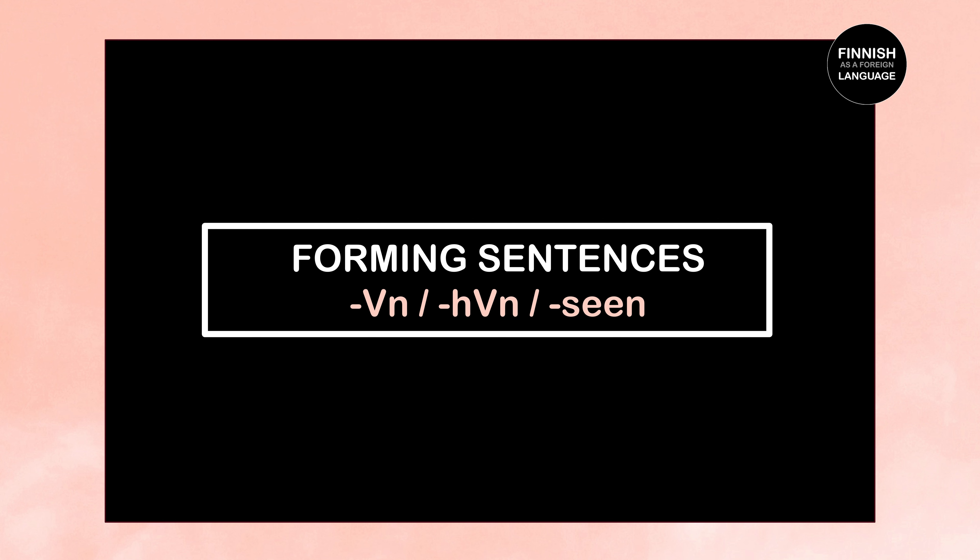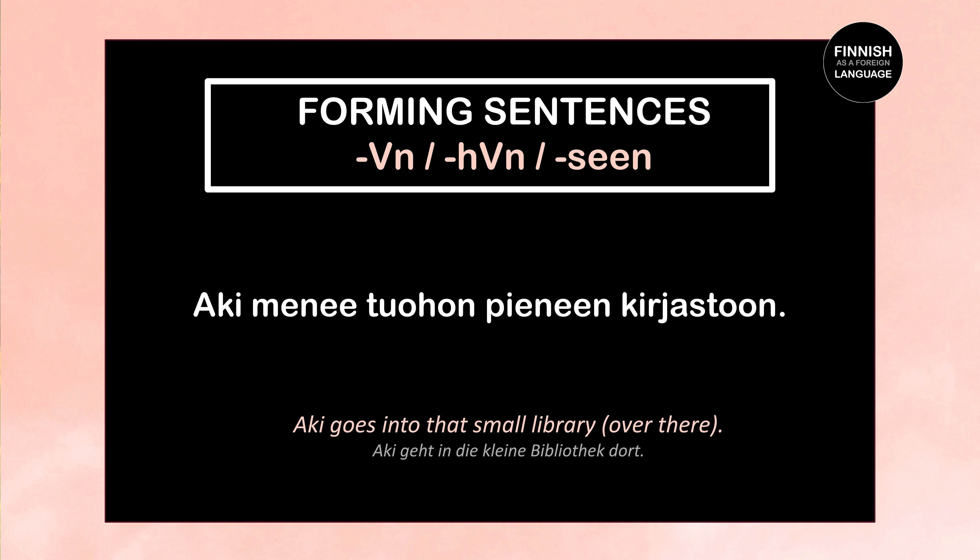Now let's look at some example sentences. Aki menee tuohon pieneen kirjastoon — Aki goes into that small library over there. Menee is the third person singular of mennä, meaning to go. Tuohon is the illative of tuo (that, referring to something further away but visible). Pieneen is the illative of pieni (small), and kirjastoon is the illative of kirjasto (library). Since tuo and pieni both refer to the library, they also take the illative case.